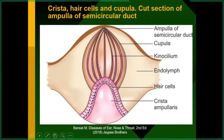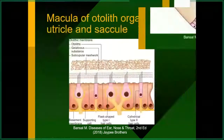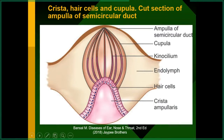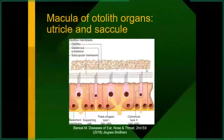Looking at the structure of the crista ampullaris, we can see the hair cells with two types: the kinocilium and stereocilia. These hair cell processes are embedded in the cupula. The cupula moves with the movement of the endolymph. If endolymph movement is towards the cupula and towards the utricle, that is called utriculopetal, and in the lateral semicircular canal that will be excitatory. Movement away from the utricle is inhibitory.